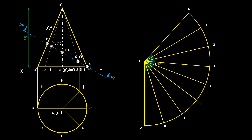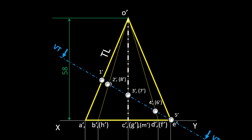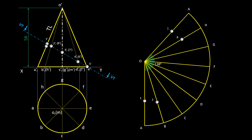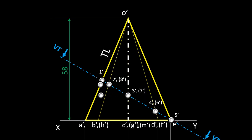Let's locate the section points on the pattern. In the front view, generators OA and OE are of true length, so we can directly measure the distance and mark it on the pattern. For the remaining generators, project the points to any true-length line in the front view and measure from there. Points 2 and 2 are on the same length, so mark them together. Similarly, locate the other points.